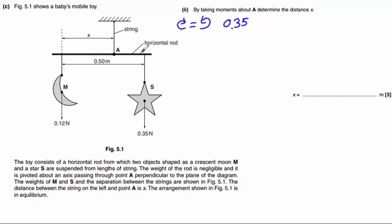Now we don't know this distance, but we do know that it is equal to 0.50 take away distance x. So we're going to write it like this: 0.35 multiplied by 0.5 minus x.